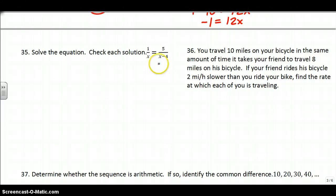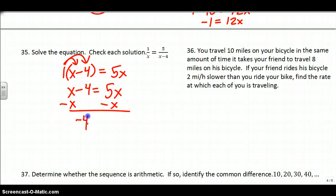35. This one, you can get common denominators if you want. I think it's easier to just cross-multiply. 1 times x minus 4 equals x times 5. Distribute the 1, x minus 4 equals 5x. Subtract x, we get negative 4 equals 4x, which means x equals negative 1. We have to check it - make sure it's not in your restrictions. x can't equal 0, can't equal 4. Our answer is neither one of those, so we are good.